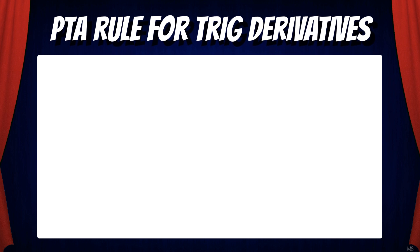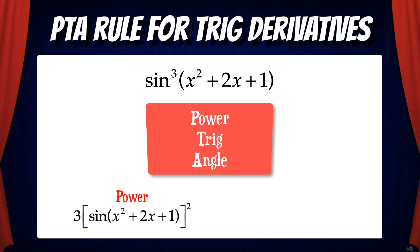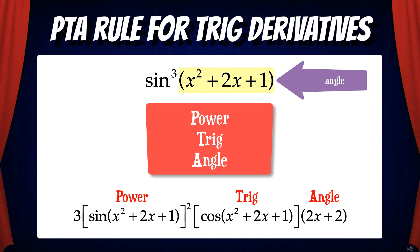There is an easier way of thinking about the last example and it's called the PTA rule for trig derivatives, where PTA stands for Power, Trig, Angle. When you have a trig function raised to a power, you can apply the PTA rule to find the derivative. First, take the derivative of the power and leave everything else the same except reduce the power by 1. Then take the derivative of the trig function and leave the inside angle the same. Finally, take the derivative of the angle. Then multiply all these together and you have the derivative.